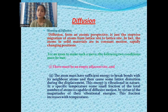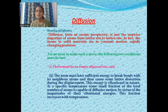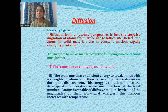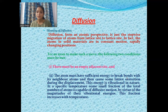How do we define diffusion? Diffusion from an atomic perspective is just the stepwise migration of atoms from lattice site to lattice site. The atoms in solid materials are in constant motion, rapidly changing their positions. When an atom makes such a move, the following two conditions must be met: first, there must be an empty adjacent site, and second, the atom must have sufficient energy to break bonds with its neighboring atoms and cause some lattice distortion during the displacement.